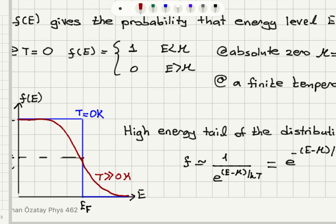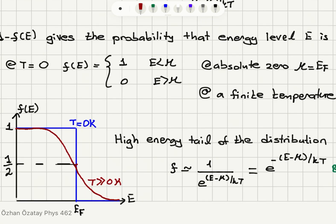We can see this result in a plot. The Fermi-Dirac distribution as a function of energy at T = 0 K is 1 below the Fermi level and 0 above it. The chemical potential equals the Fermi level at T = 0. As temperature increases, the 1/2 level shifts slightly, so the chemical potential differs from the Fermi level.